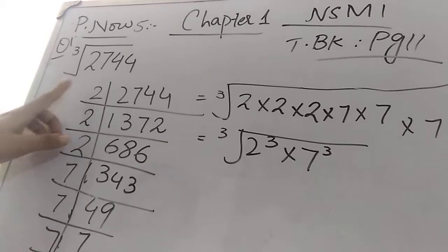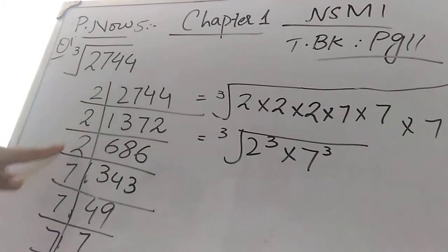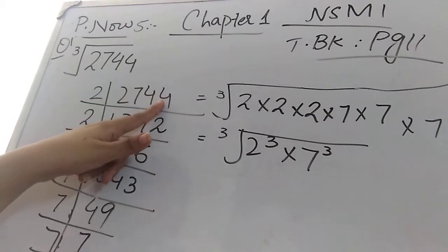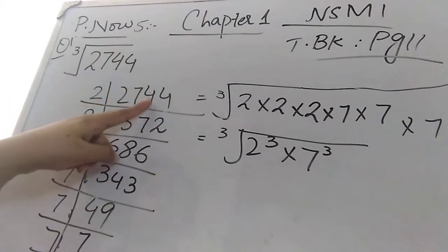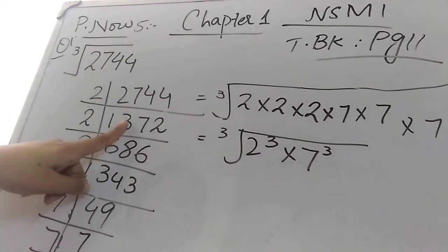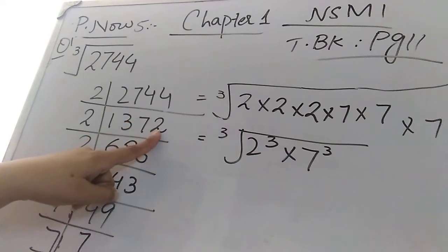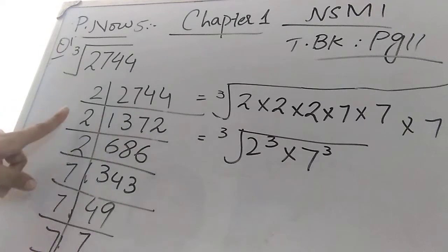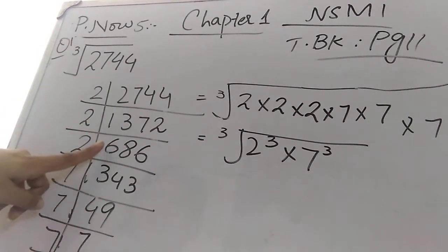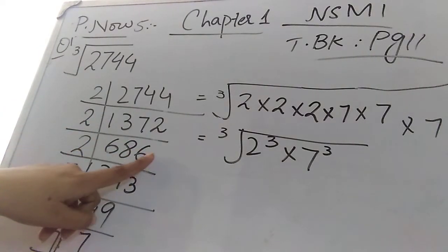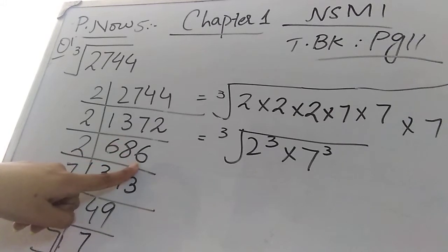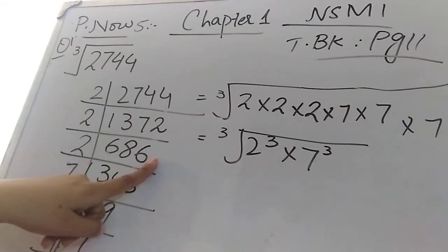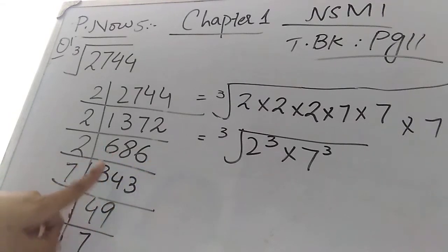I have found the prime factors of 2744. First, it will divide by 2 because the last digit is even, so it is divisible by 2. We continue dividing by 2 — the last number is even, so it is again divisible by 2. Dividing once more by 2, and now we check: the result is not divisible by 3, 4, 5, or 6.